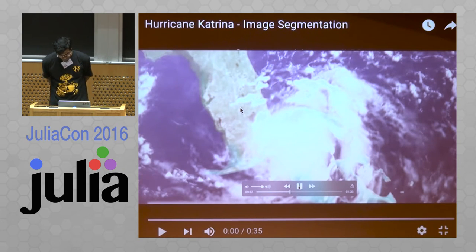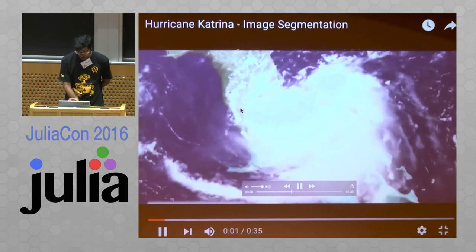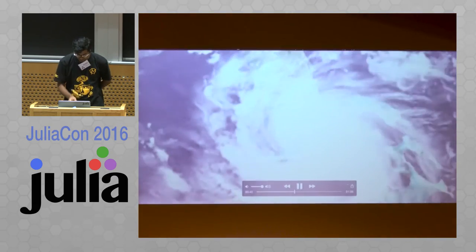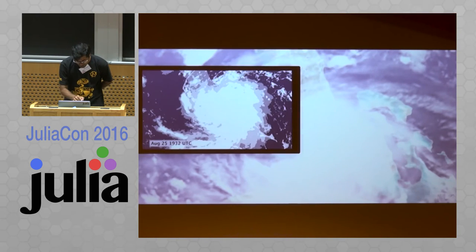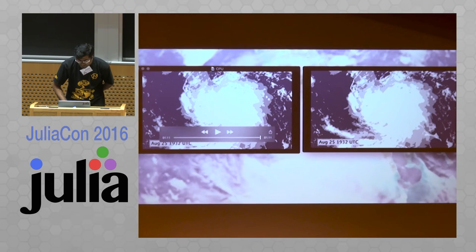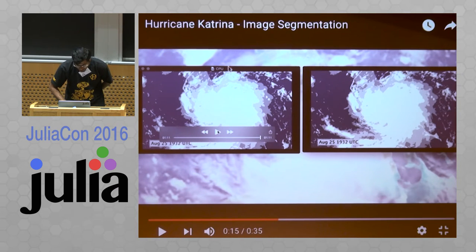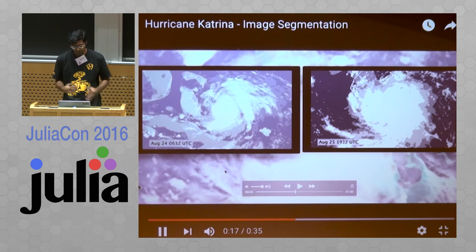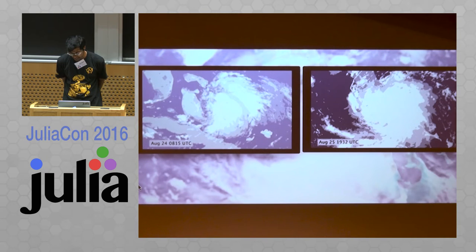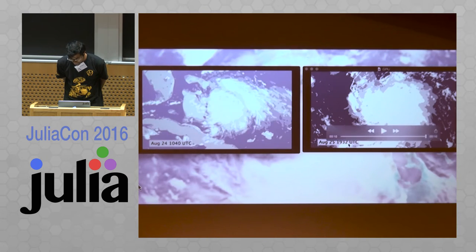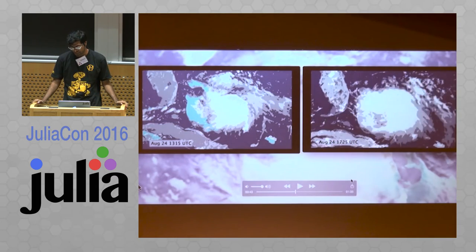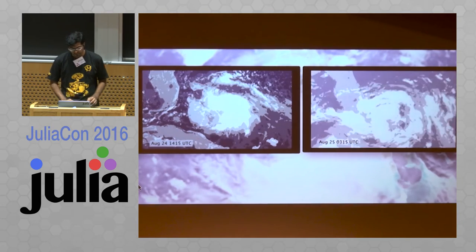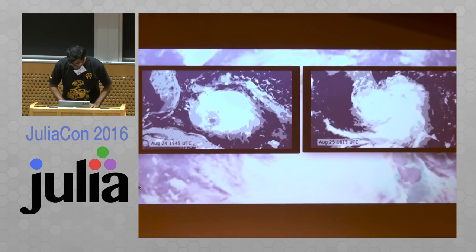Let me let this run. You can see the storm moving towards land. We'll have both the segmented versions side by side — the CPU version and the GPU version. This has been time-scaled to give you an idea of relative performance. As you can see, the GPU is a lot faster than the CPU version — it turns out it's over 12 times faster.